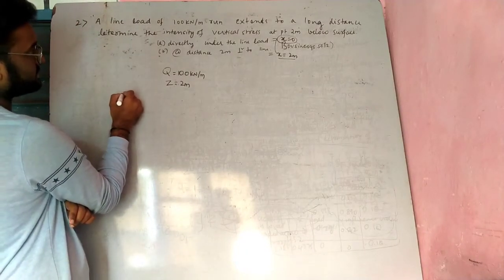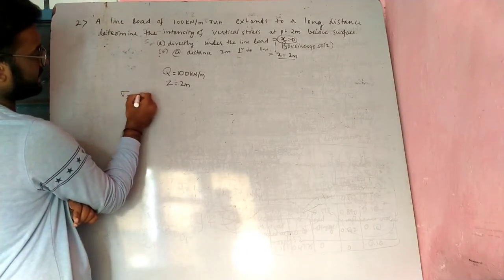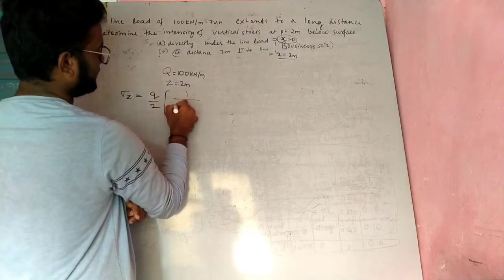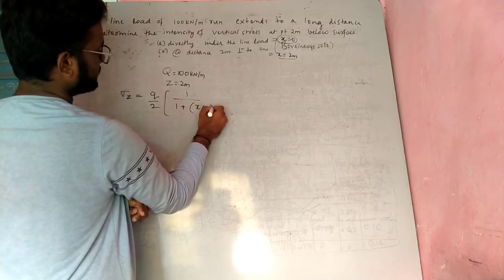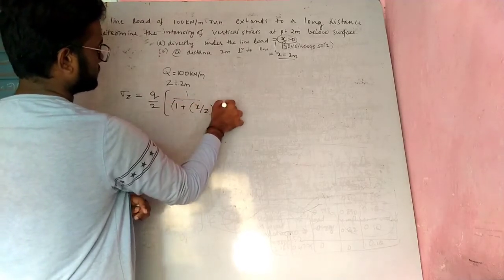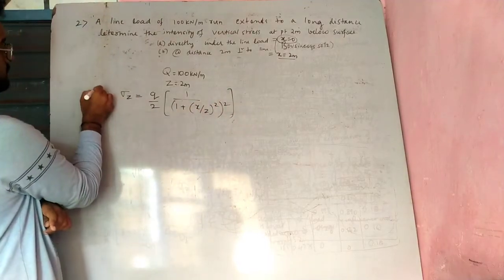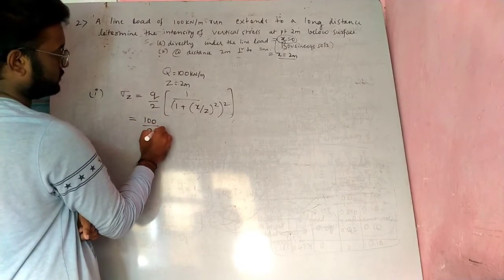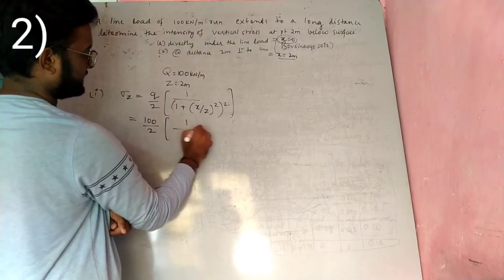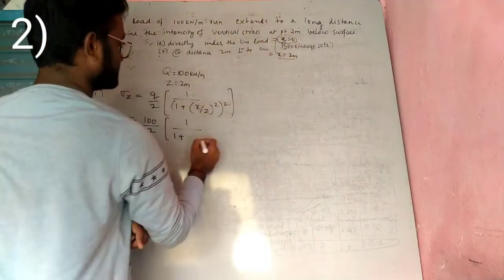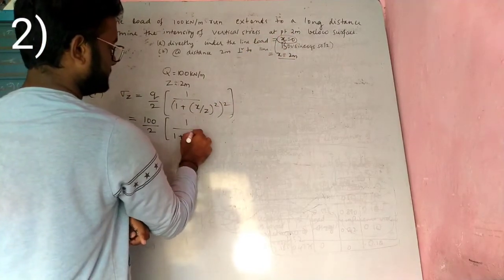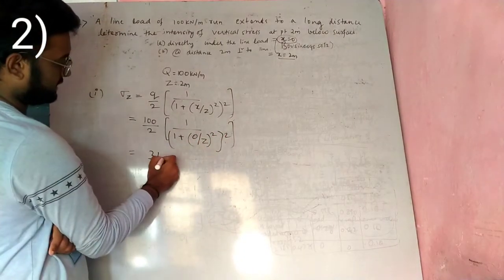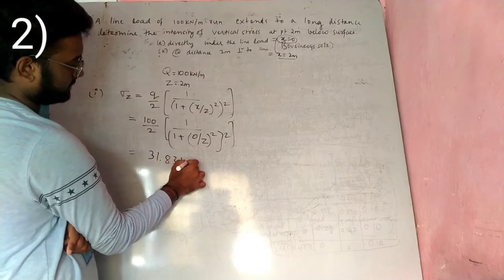The formula for vertical stress under a line load is σz equal to q divided by 2 multiplied by 1 divided by (1 plus (x/z)²), whole square. For x equal to 0: σz equals 100/2 × 1 divided by (1 plus 0/z)², giving 31.83 kN/m².